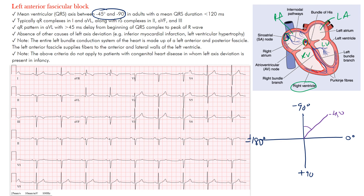In left anterior fascicular block, the left anterior fascicle is blocked. Conduction comes down fine, goes to the right ventricle, but then meets a delay at the anterior fascicle. As a result, depolarization of the left ventricle relies on the left posterior fascicle. Left anterior fascicular block — also called left anterior hemiblock — is an anatomical or functional dysfunction in that left anterior fascicle, which consists of thin fibers innervating the anterior-lateral left ventricle.